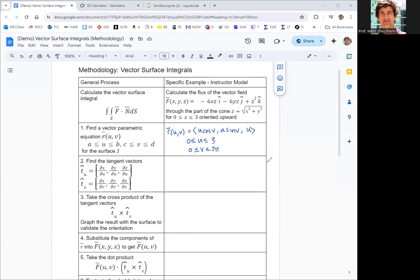Then we find the tangent vectors that consist of partial derivatives of X, Y, and Z with respect to U and V. Taking partial derivatives with respect to U: the derivative of U cosine V is cosine V, U sine V with respect to U is sine V, and then U is one. For TV: derivative of U cosine V with respect to V is negative U sine V, derivative of U sine V with respect to V is U cosine V, and the derivative of u with respect to v is 0.